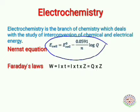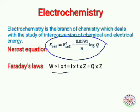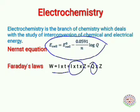We will be solving some numericals on Faraday's laws. Faraday's first law: weight deposited or weight liberated is proportional to current × time. That equals I × T × Z, where Z is the electrochemical equivalence. Since I × T = Q, we have weight deposited = Q × Z.